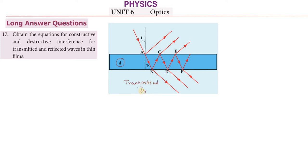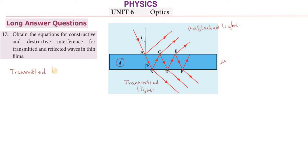Let us try this. We have one transmitted light and one reflected light. For transmitted light and for reflected light, the material has a refractive index nu. Now for the transmitted light, let us consider the path difference between the two light rays.